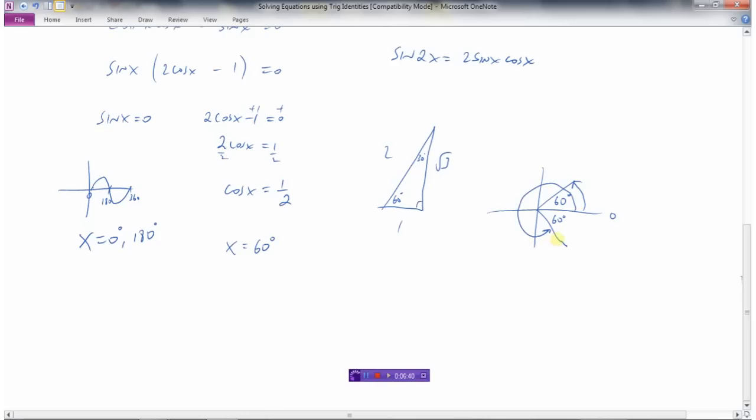Cos x is equal to positive 1/2. We know cosine is positive in quadrant 1 and positive in quadrant 4. We've just found our reference angle of 60 degrees. So measuring from 0, one answer for x will be 60 degrees. The second answer will be 360 all the way around minus 60 degrees, which is 300 degrees. So our answers are 0 degrees, then 60 degrees, then 180 degrees, and then finally 300 degrees.